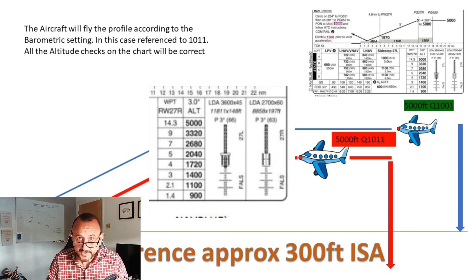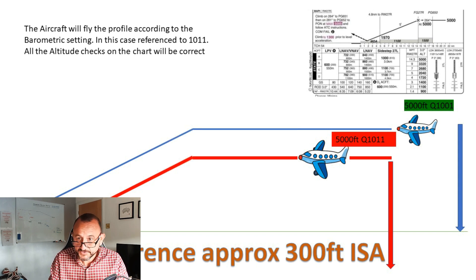When you look at the height checks along the profile, it will be correct because it's based on an incorrect baro data. If at seven miles the aircraft's at four and a half thousand feet, for example, well that's what it's going to fly, but of course it's based on 1011 not on 1001.